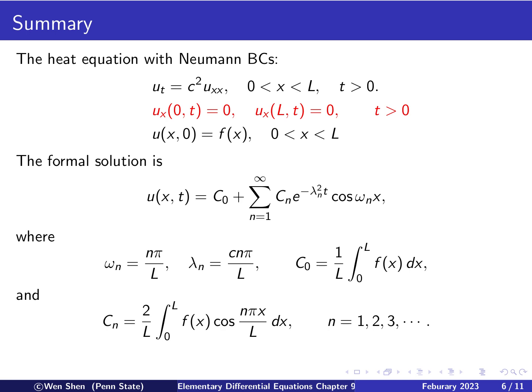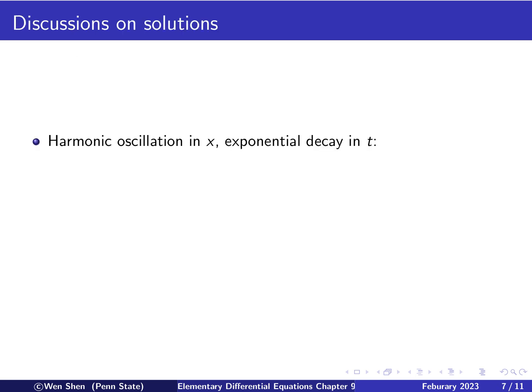Now let's look at how this solution behaves. Let's make some discussions about the properties of this solution. So first we see that for each of the eigenfunctions, we have harmonic oscillation in x, the f function, and exponential decay in t.